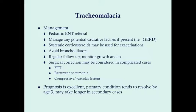Management involves referring all children to a pediatric ENT. Manage any potential causative factors — investigate these especially if history is suspicious. Systemic corticosteroids can be used for exacerbations, such as when the child with tracheomalacia gets a respiratory tract infection — provided you rule out pneumonia, where corticosteroids would worsen the condition. Corticosteroids reduce inflammation and risk of respiratory distress but are not given long-term.